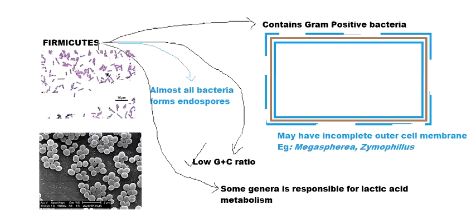Some genera of this Firmicutes phylum are responsible for lactic acid metabolism, which involves the spoiling of milk into curd as you might think about. Examples of such genera include the very famous Lactobacillus and Leuconostoc. These are some characters of the phylum Firmicutes.